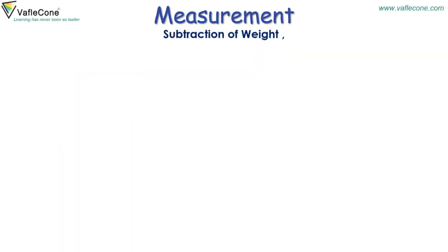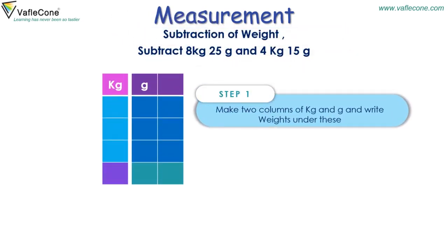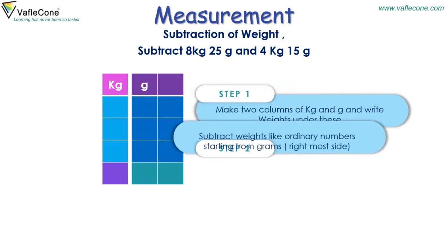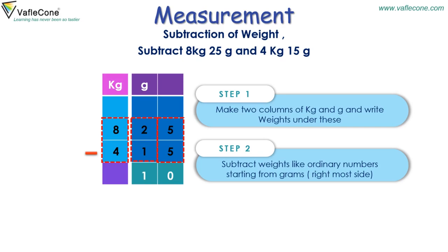Subtraction of weight. Subtract 8 kilograms 25 grams and 4 kilograms 15 grams. Step 1: Make two columns of kilogram and gram and write the weights under these. Step 2: Subtract weights like ordinary numbers starting from grams. Place values in gram and kilogram columns. 5 minus 5 is equal to 0. Then 2 minus 1 is equal to 1. In the kilogram column, 8 minus 4 is equal to 4 kilograms.